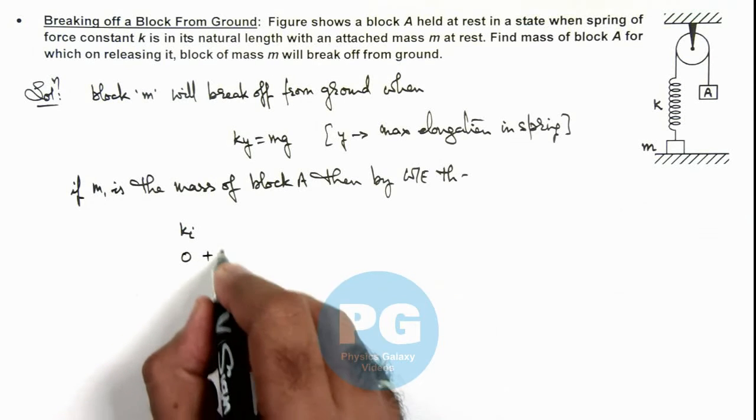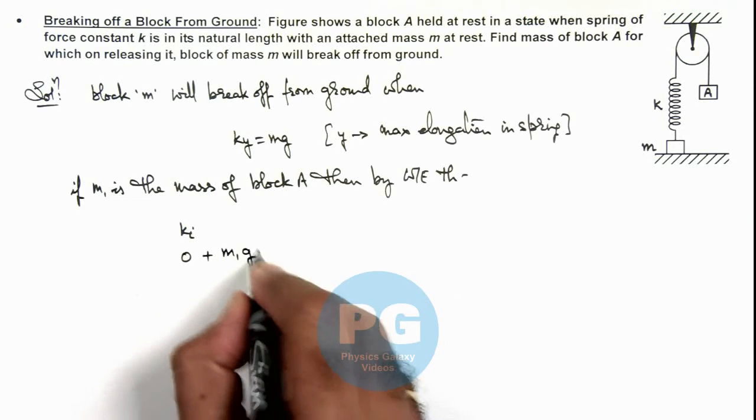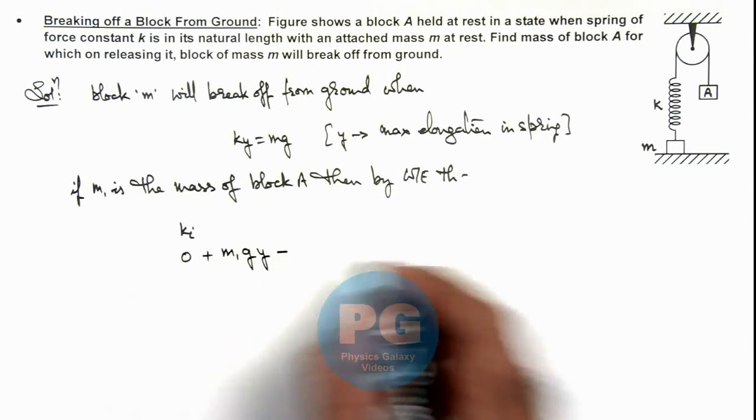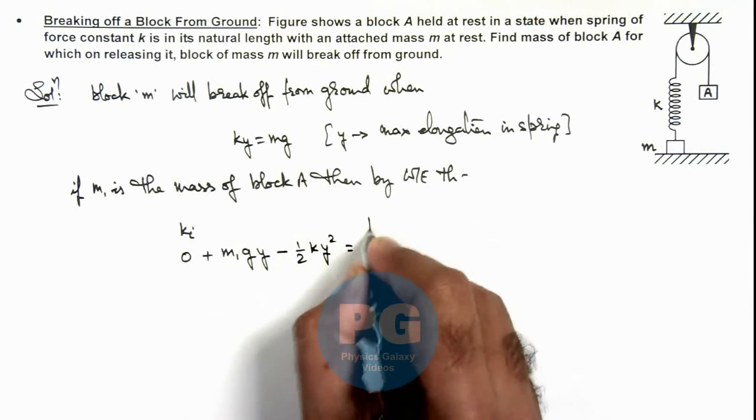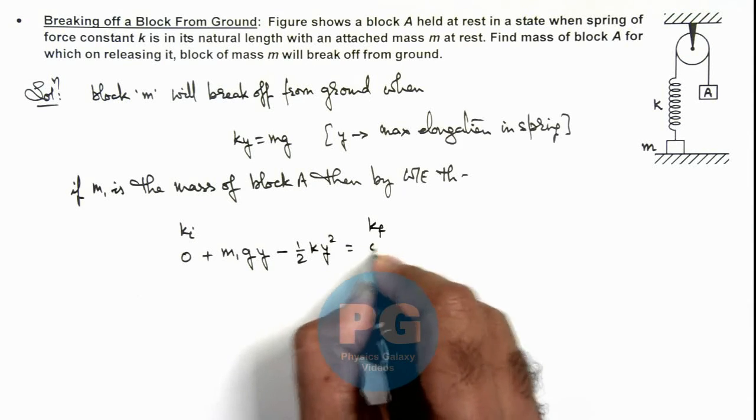Here work done by gravity on it is m1 g y minus the energy stored by the spring will be half k y square, is equal to the final kinetic energy, which can be written as zero.